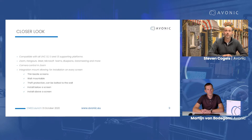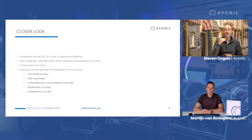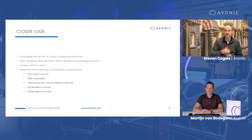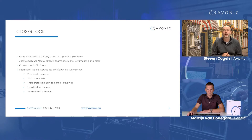A lot of similar products to the CM22 can only be installed above the screen. But the height of the camera makes a lot of difference for line of sight and how you present yourself to the other side. So the ability to install it either above or below a screen was absolutely a mandatory feature for the new CM22.